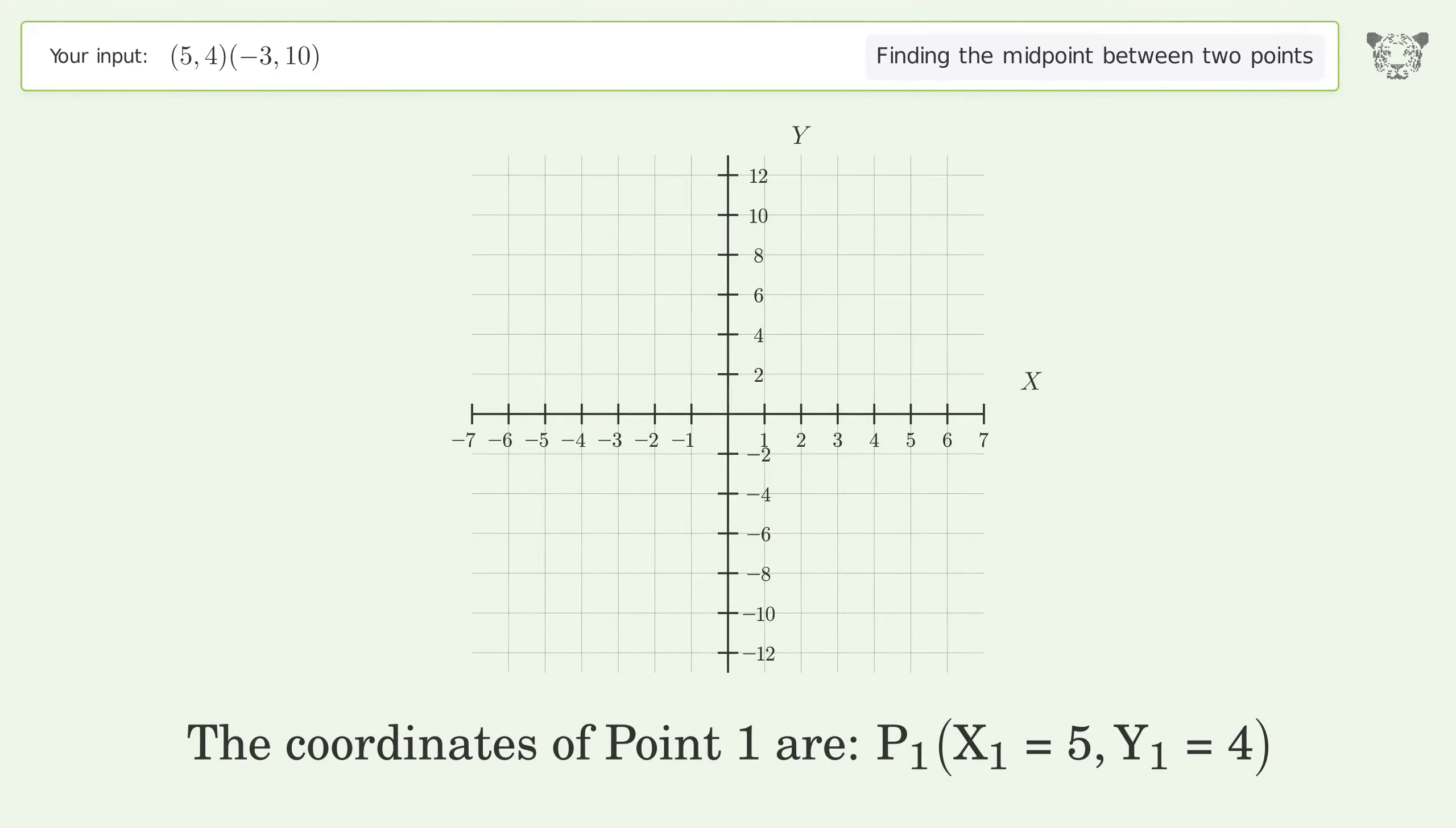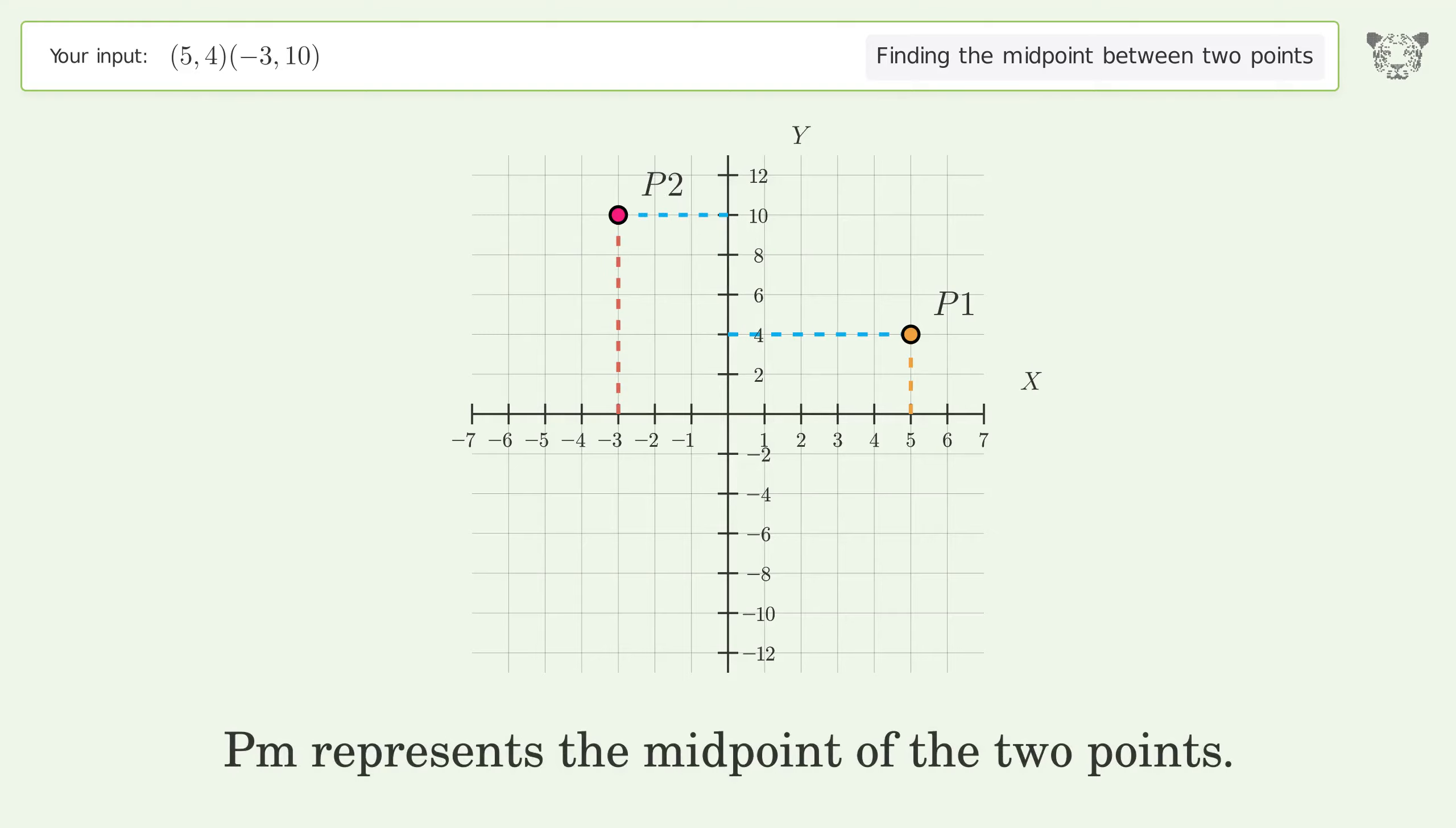The coordinates of Point 1 are x₁ = 5, y₁ = 4. The coordinates of Point 2 are x₂ = -3, y₂ = 10. Pm represents the midpoint of the two points.